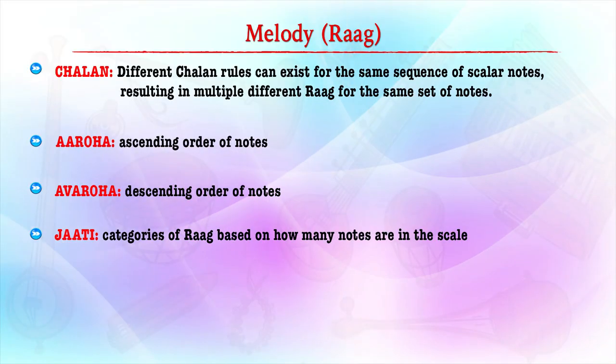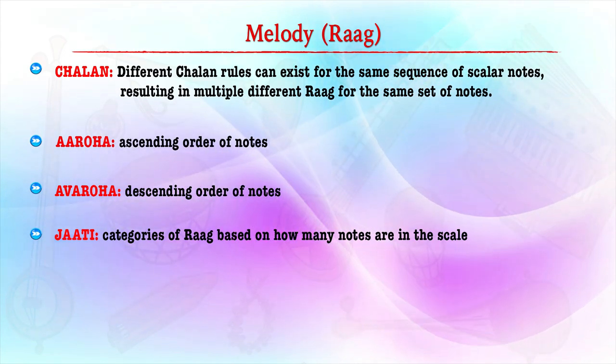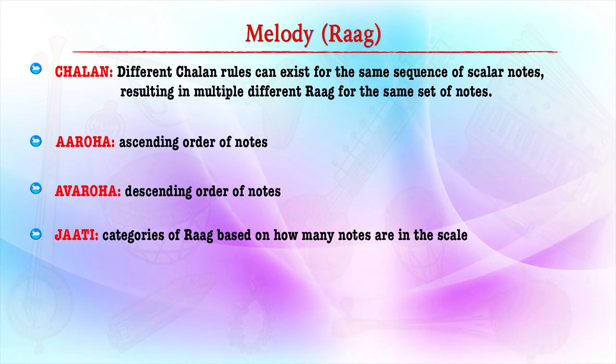Ragas use different notes in ascending or descending ways. They have specific combinations, and in Indian music these combinations were experimented with under the patronage of various rulers. Various sequences of scales result in different ragas. Aroha is the ascending order of notes, Avroha is the descending order of notes, and Jati is the category of a raga based on how many notes are in the scale. These ragas create a sentiment or mood called ras, which conveys a story or emotion to the audience.